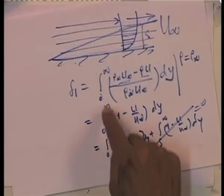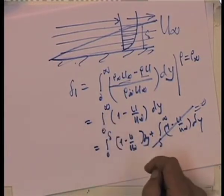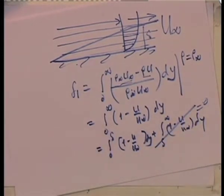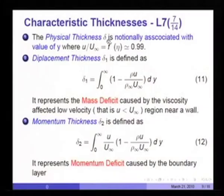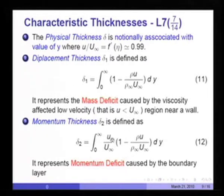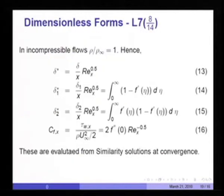For uniform property flow where ρ = ρ∞, displacement thickness simplifies to δ₁ = ∫₀^∞ (1 − u/u∞) dy. Beyond the boundary layer u equals u∞, so the integral beyond δ is zero. This is called the displacement thickness, and it is a far more precise quantity than the notional δ. Similarly, momentum thickness δ₂ = ∫₀^∞ (u/u∞)(1 − u/u∞) dy, representing the momentum deficit due to the boundary layer.